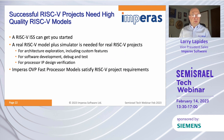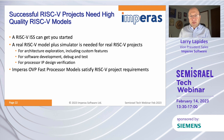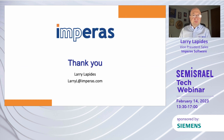To sum up: successful RISC-V projects need high-quality RISC-V models. A RISC-V instruction set simulator can get you started, but a real RISC-V model plus simulator is needed for real RISC-V projects — for architecture exploration including custom features, for software development and debugging, and for processor IP design verification. The Empiris OVP fast processor models satisfy these RISC-V project requirements. Thank you very much.